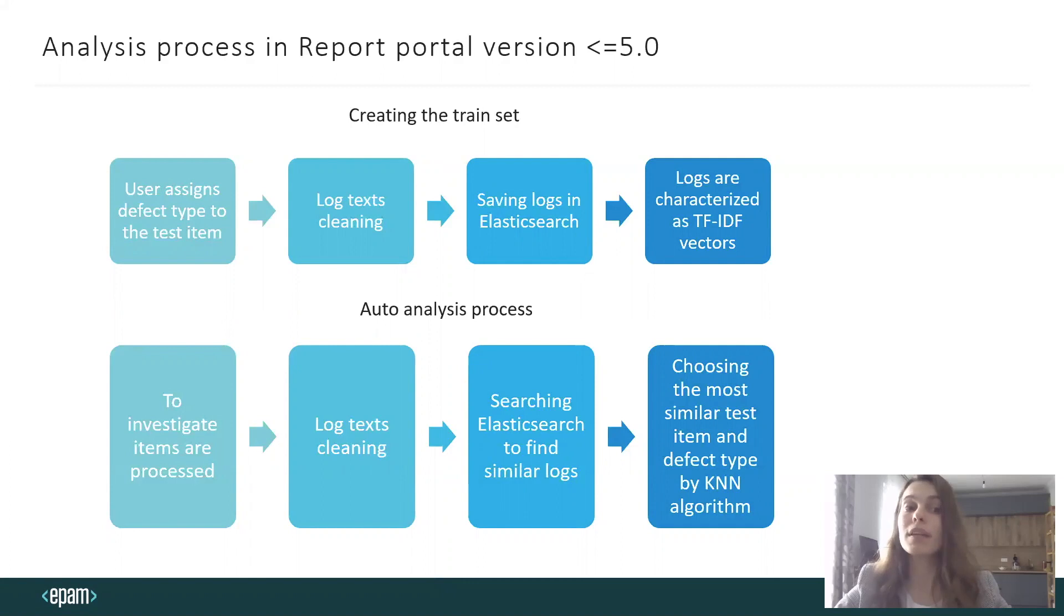When the user assigns a defect type to a test item, we take logs from them, pre-process and save them in Elasticsearch in a form convenient for search. When new failed test items appear, we try to search similar test items for them in Elasticsearch and choose the most relevant one by the KNN algorithm.